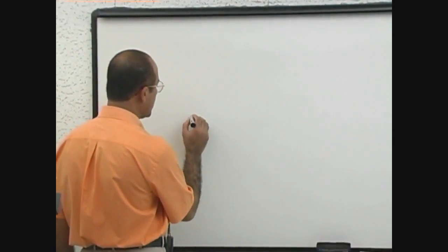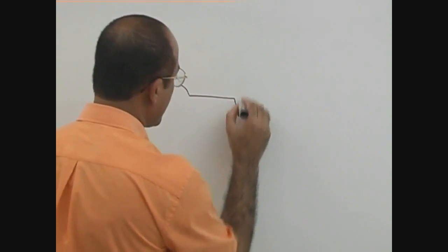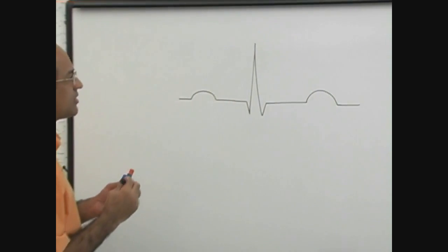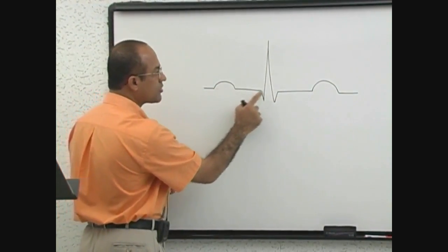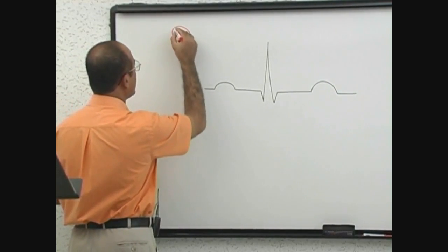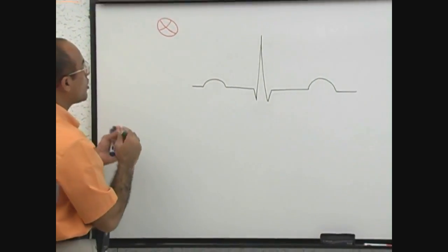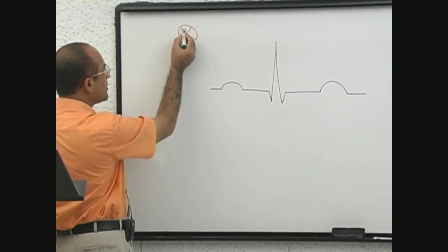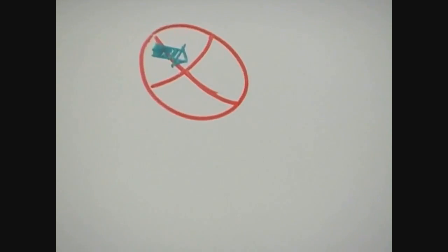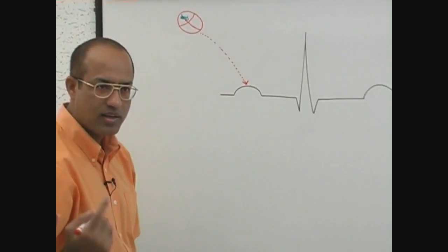Let us suppose this is a typical ECG pattern. First, we relate the different parts of the ECG with the cardiac events. Suppose this is your heart. This is P wave. The cause of P wave is atrial depolarization. This is the atrial depolarization, which is related with the P wave. So what is the significance of P wave? Atrial depolarization.